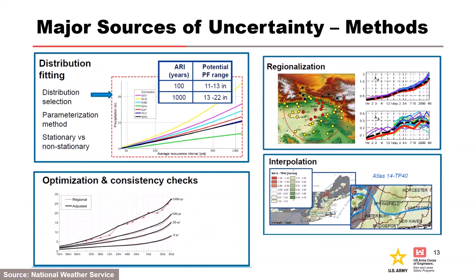Frequency analysis itself also has uncertainty from distribution selection. Over time, different volumes used different distributions. The choice of how to parameterize the methods, stationarity vs. non-stationarity, regional method effects, and optimization of depth-duration-frequency curves all matter. For example, all seven distribution curves might statistically match the data, but by the 1,000-year return period the curves diverge significantly — using Pareto versus GEV can give a big difference that can be both viable given the actual data.